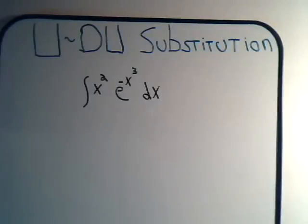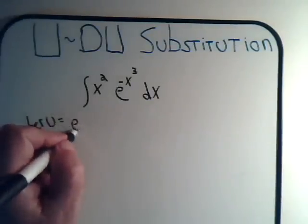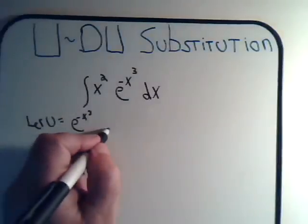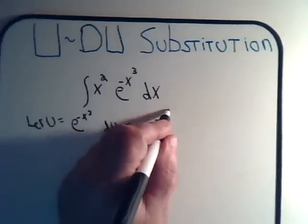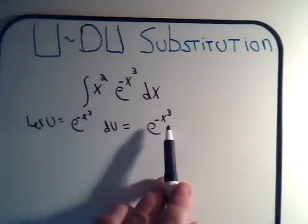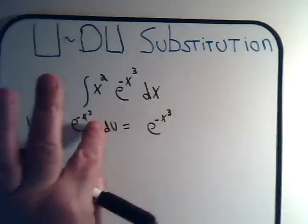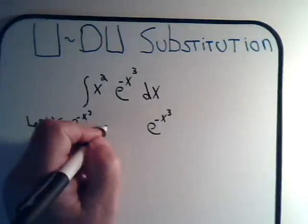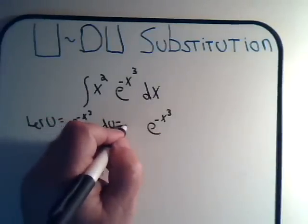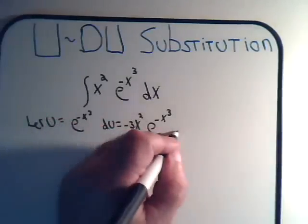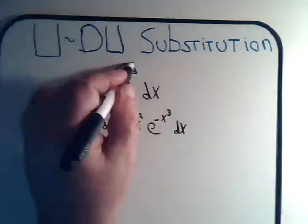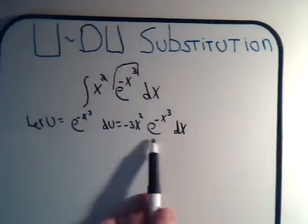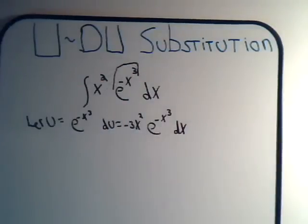For example, if we said let U equal e to the minus x cubed, DU will equal e to the minus x cubed. And then I had to take the derivative of this, which would be DU would equal minus 3x squared dx. So this would be U, but DU has all these other terms in it, mainly this one, so that wouldn't work out for us.